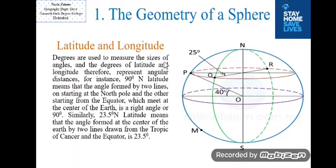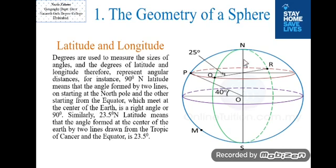Degrees are used to measure the size of angles, and the degrees of latitude and longitude therefore represent angular distances. For instance, 90 degrees north latitude means that the angle formed by two lines — one starting at the North Pole and the other starting from the equator — which meet at the center of the Earth, is a right angle or 90 degrees. Similarly, 23.5 degrees north latitude means that the angle formed at the center of the Earth by two lines drawn from the Tropic of Cancer and the equator is 23.5 degrees.